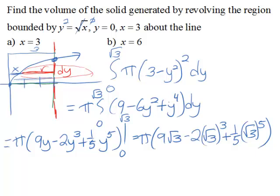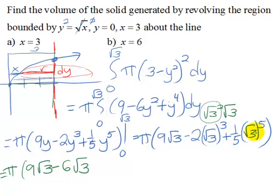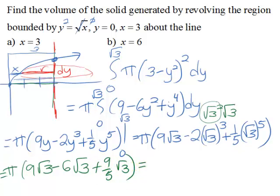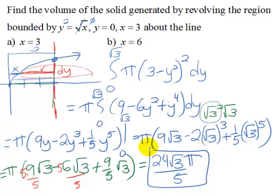Now let's simplify that. The square root of 3 cubed is the square root of 3 squared times another square root of 3, and that squared part is just 3, so we're going to have pi multiplied by 9 square roots of 3 minus 6 square roots of 3. For the last term, square root of 3 squared twice is 3 times 3, giving 9/5, and we still have a square root of 3 left. Getting a common denominator: 45√3/5 minus 30√3/5 plus 9√3/5 gives us 24√3 π/5 as our volume.